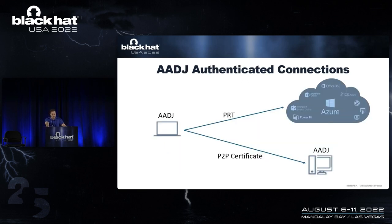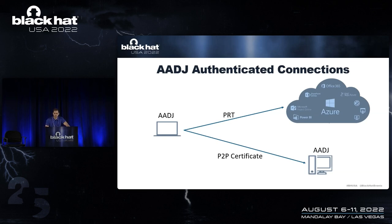When talking about Azure AD joined devices, it's important to understand authenticated connections. We have two main scenarios. The first is when you want to authenticate to a SaaS application — we use something called a PRT. For example, when authenticating to SharePoint Online, we use the PRT to exchange for an access token. The second scenario is when you're on an Azure AD joined device and want to authenticate to another Azure AD joined device — in this case we use a P2P certificate, or peer-to-peer certificate, which is issued using the PRT.